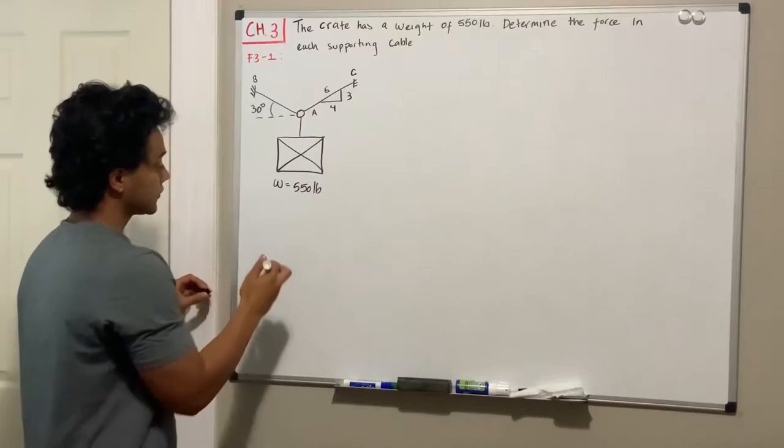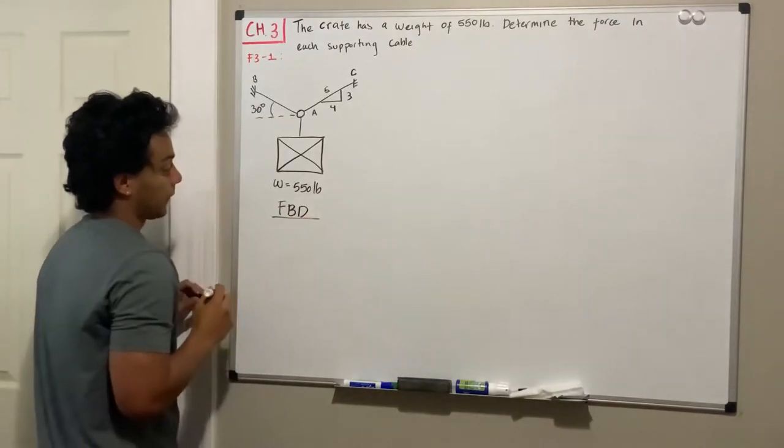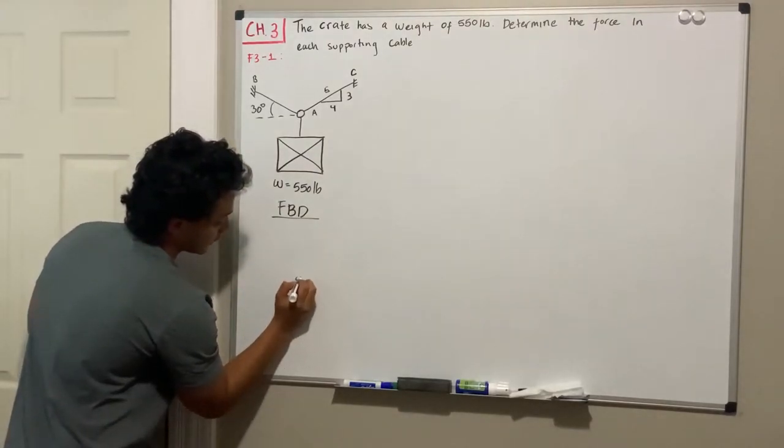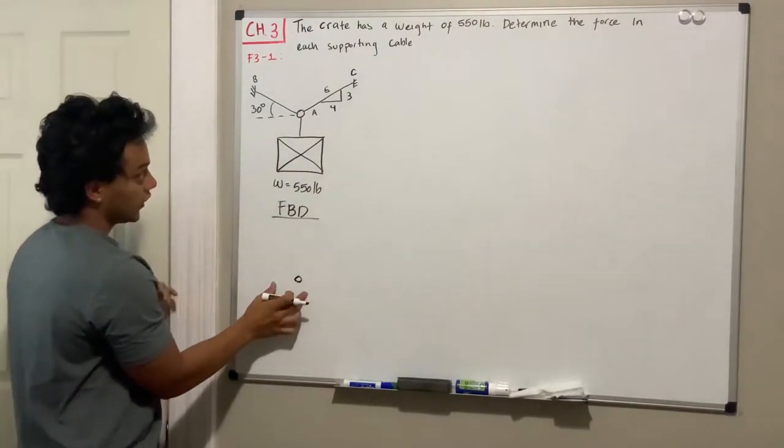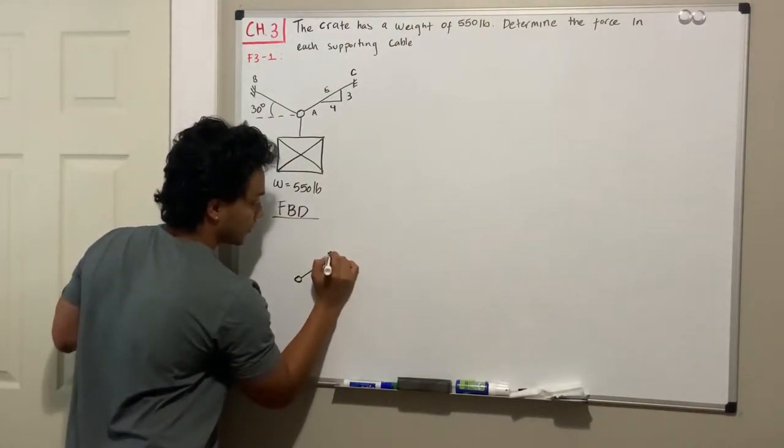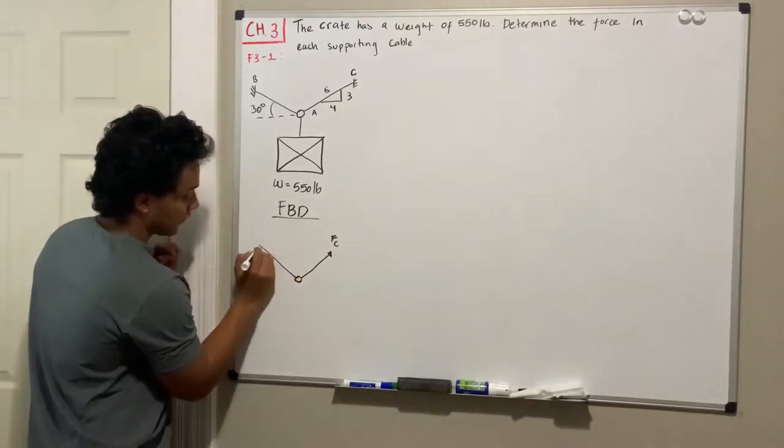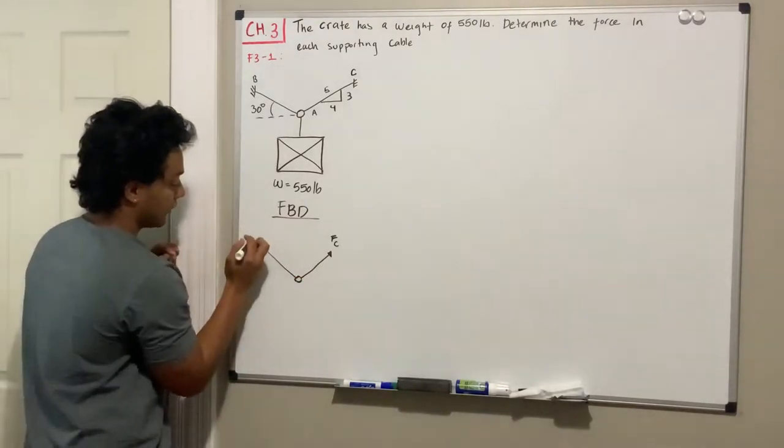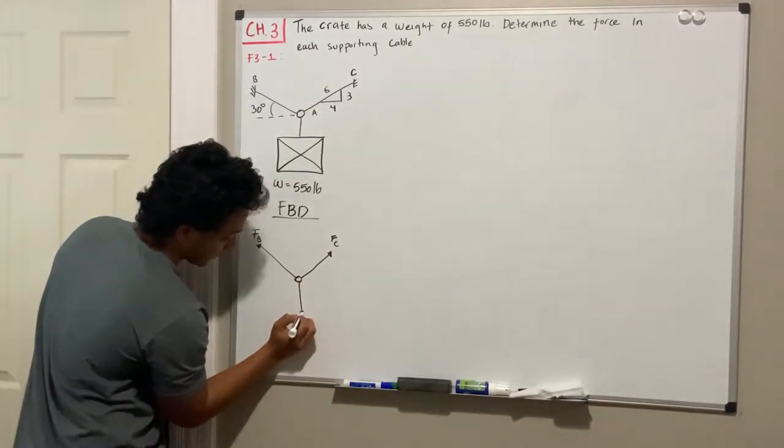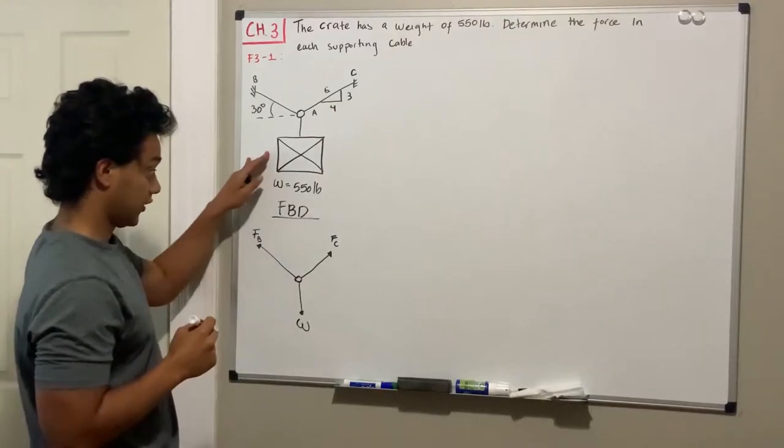So the key of this problem is usually to draw a free body diagram. I am going to draw a free body diagram from point A. So let's say this is my point A in my free body diagram. I will have a tension force that cable C is doing, so that force I am going to call it force C. Same for B, I will have a force going in that direction that cable B is doing. And lastly, I have the weight, let's call it W for weight, that the crate is doing.